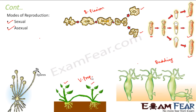In some other organisms like rhizopus or fungi, they reproduce asexually by spore formation. There are small spores contained in certain structures in their bodies, and these spores are capable of giving rise to new organisms altogether. There are also many other modes like fragmentation and regeneration by which living organisms can reproduce asexually.